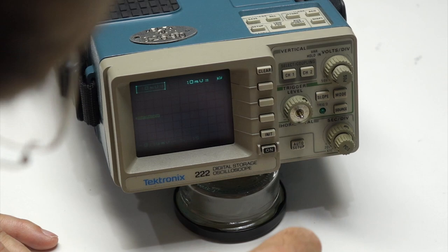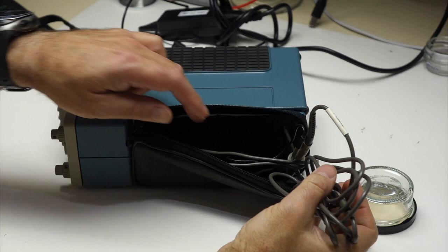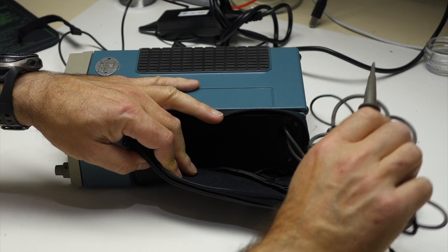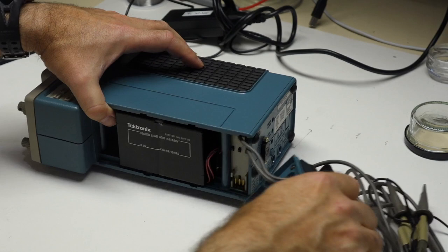And over here it has all its probes, which is nice, because those are weird impedance probes. So when you don't have them, it's hard to replace. Possible, but difficult. And I think that slides away, because it's the battery compartment. Here we go. Here is the battery compartment. It's completely dead. Let me figure out how to get in it.